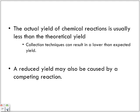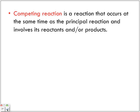The actual yield of chemical reactions is usually less than the theoretical yield. Collection techniques can result in a lower than expected yield. A reduced yield may also be caused by a competing reaction. So what we have is another reaction that is competing for that final reaction. So we'll see that in the following example here.